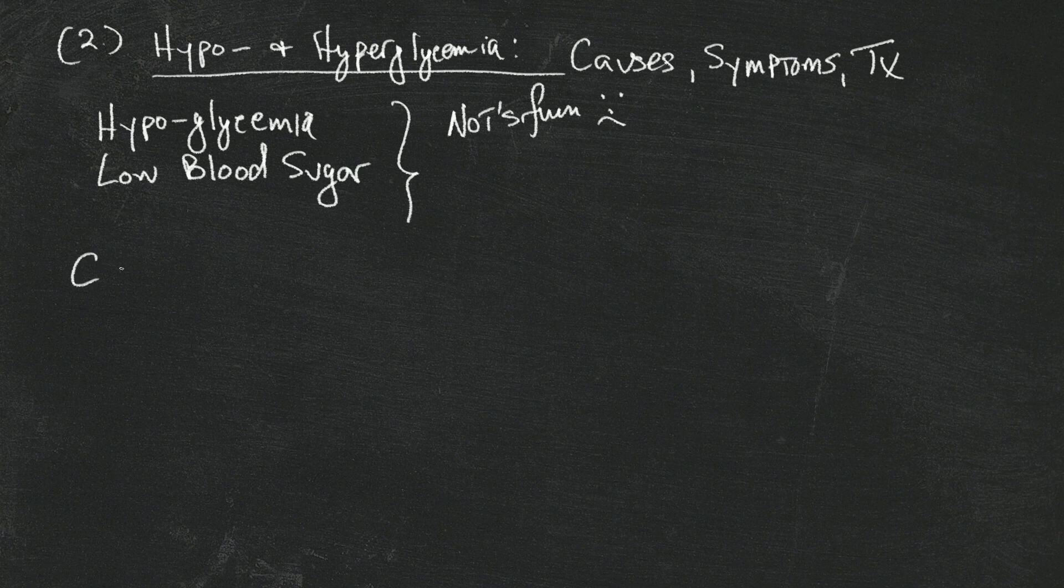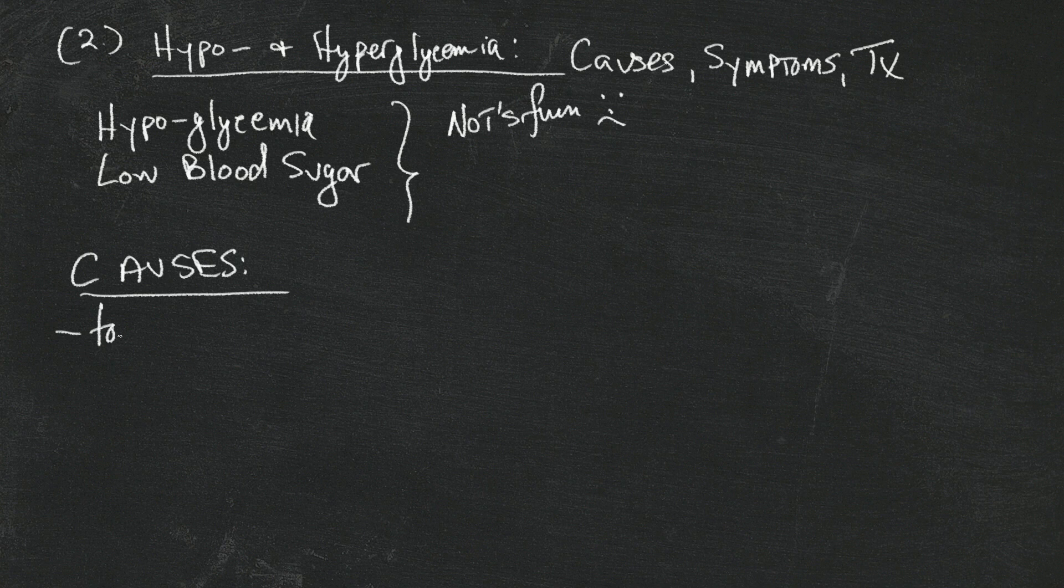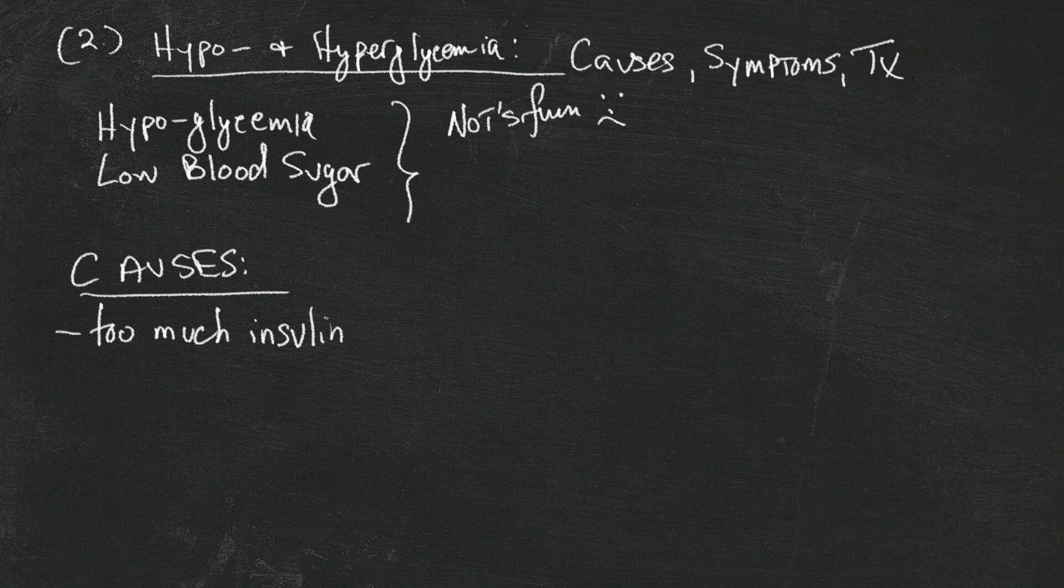You can call it whatever you want, but a lot of times it's not fun. One of the causes of low blood sugar is too much insulin. And what you need to know is that this is all relative - there's no such thing as too much insulin unless it's bringing your blood sugar down.